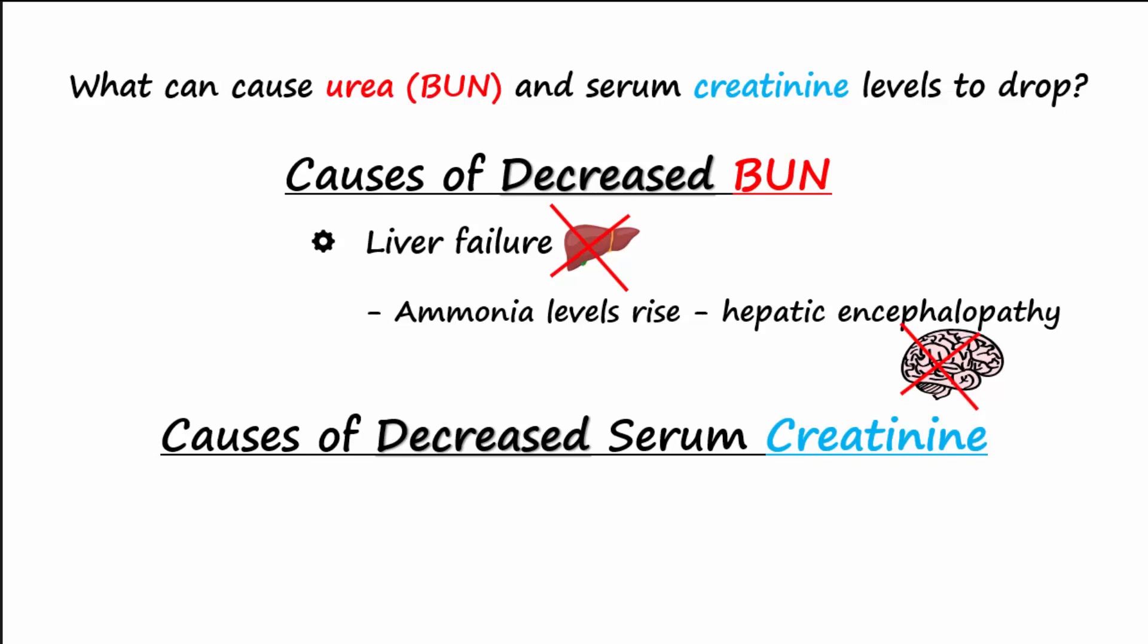Serum creatinine is decreased in individuals with low muscle mass. Here's an animated summary now of how BUN and creatinine are produced.